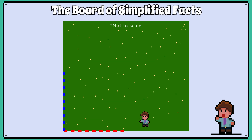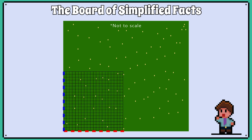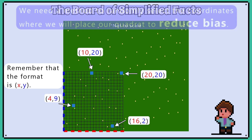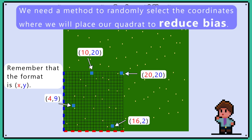Of course, sampling an entire field would be very time consuming and difficult. In a sense, we have a graph, and we could imagine that each 1 metre square is a coordinate on the graph. At this point, it is important that we sample randomly to reduce bias. We sample randomly to reduce bias.